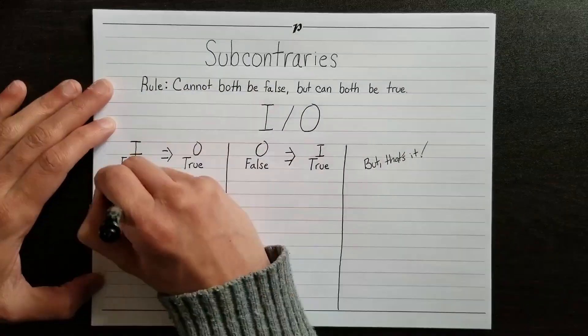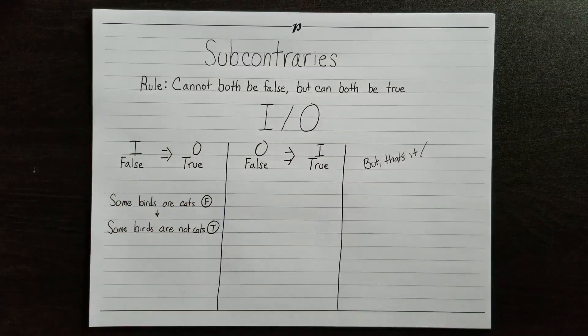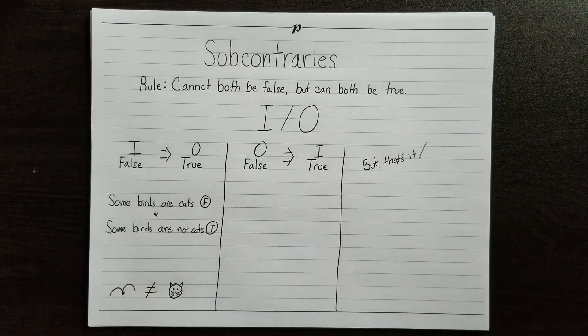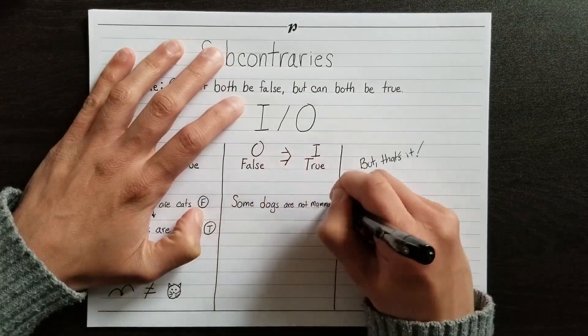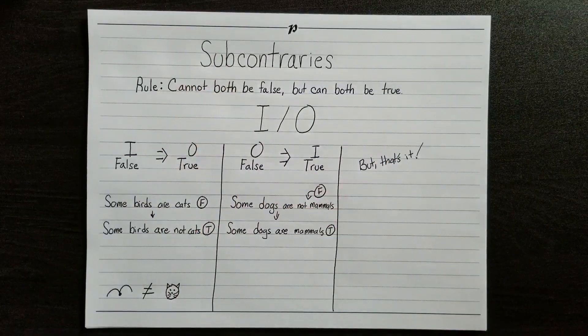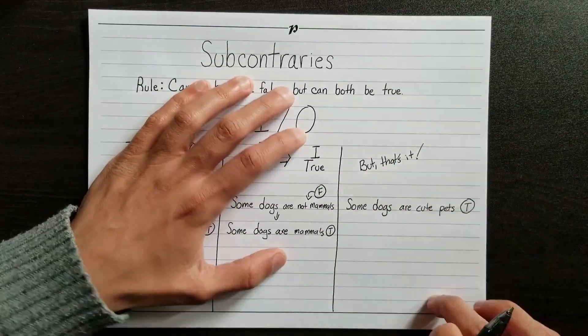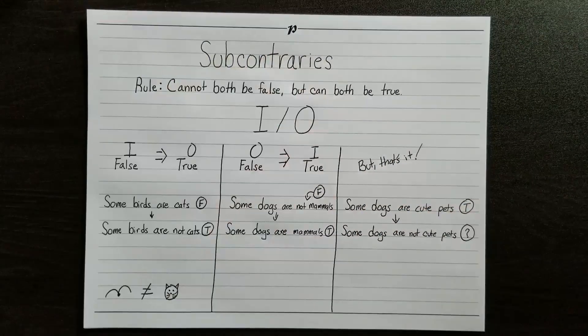Since it's false that some birds are cats, we can safely say that it's true that some birds are not cats. In logic, 'some' just means at least one, and it's definitely true that at least one bird is not a cat, since we know that no birds are cats. Since it's false that some dogs are not mammals, it must be true that some dogs are mammals. We can't infer anything from a true I- or O-type statement. Just because we know that some dogs are cute pets, it doesn't follow that the statement 'some dogs are not cute pets' is true or false — it's just not an inference we can make.